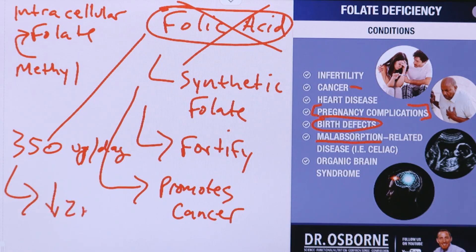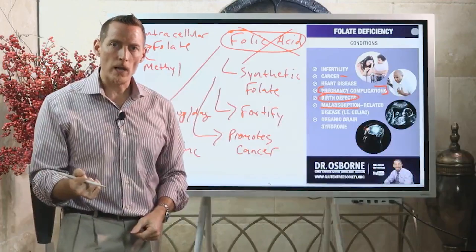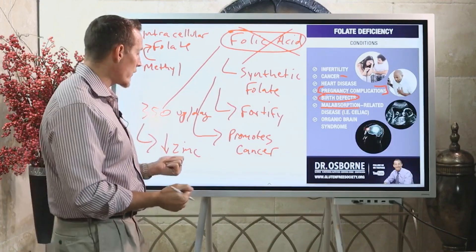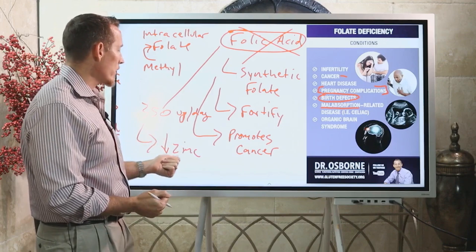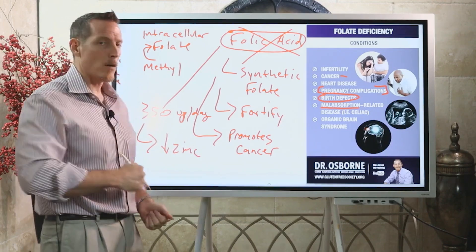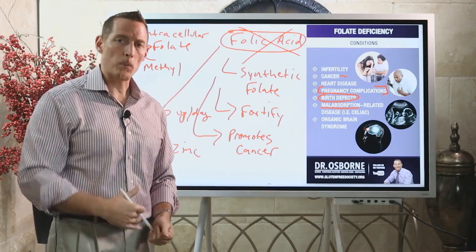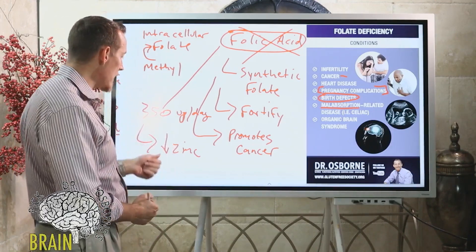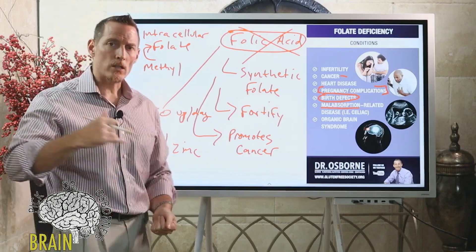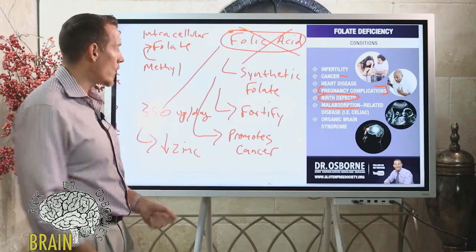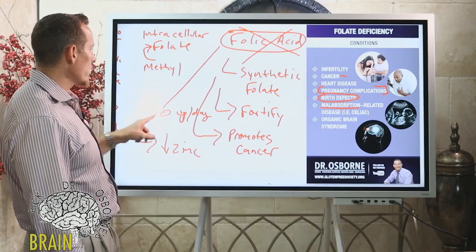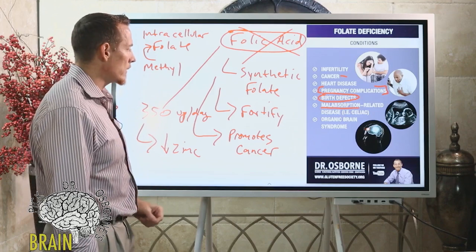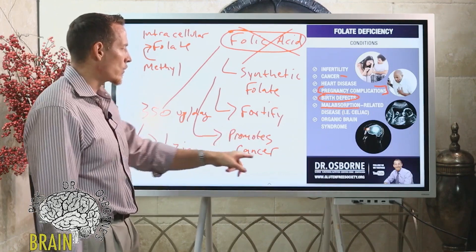Zinc plays a role in 700 different biochemical reactions inside the body. When we start interfering and lowering zinc, we can develop DNA mutations and increased risk for cancer. We can make our immune system shut down and be more prone to colds, flus, and infectious disease. Zinc is important for digestive enzyme production and is an important antioxidant.